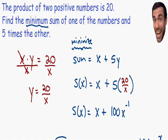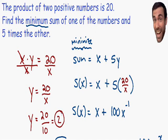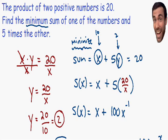Now that we have x = 10, we can easily find y by plugging into y = 20/x. So y = 20/10 = 2. With x = 10 and y = 2, we can answer the question: find the minimum sum. Plugging into the sum equation: 10 + 5·(2) = 10 + 10 = 20. This is our minimum sum — the smallest sum you can find using the numbers x and y.